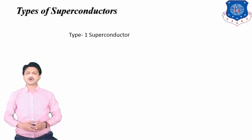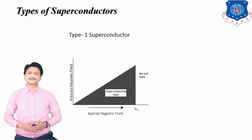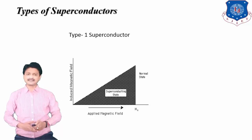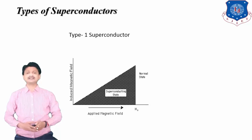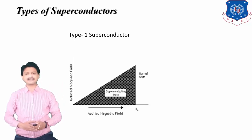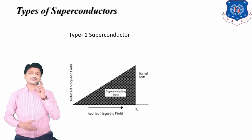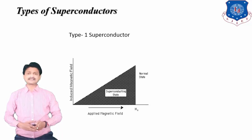Type 1 superconductor is also known as a soft superconductor. As you can see in the figure, there is only one critical magnetic field. If the value of the magnetic field is less than the critical magnetic field, the material is in the superconducting state. If greater, the material returns to the normal state. The value of this critical field is very low, which is why Type 1 superconductors have limited industrial applications.